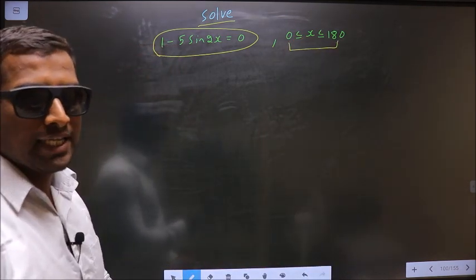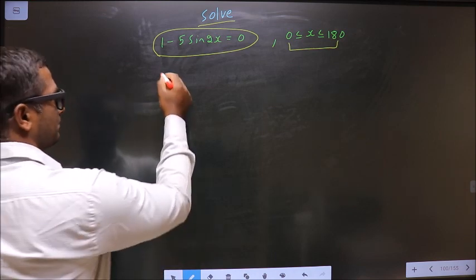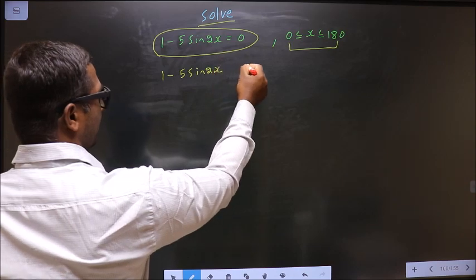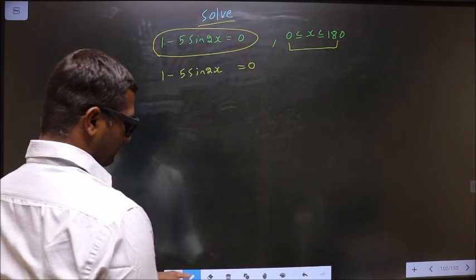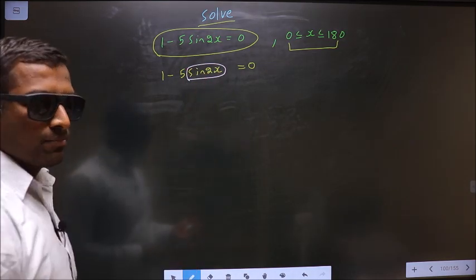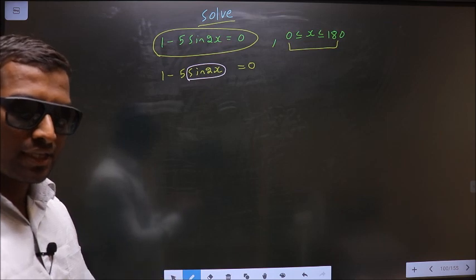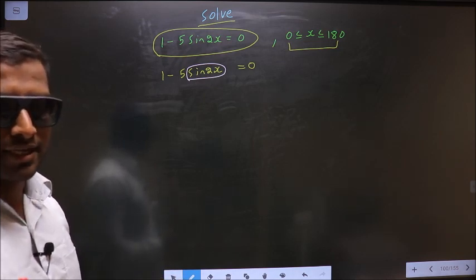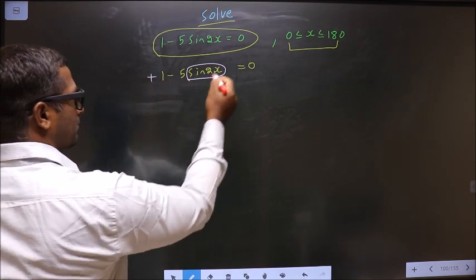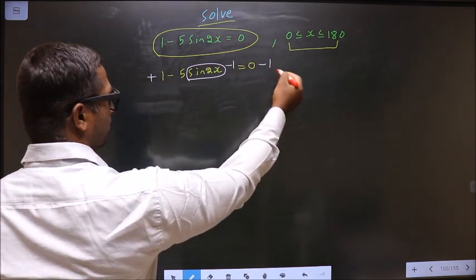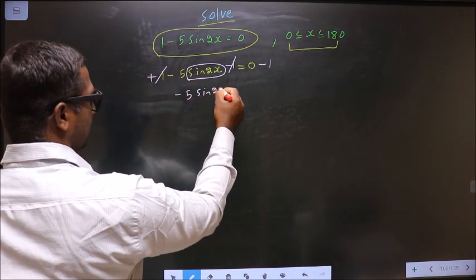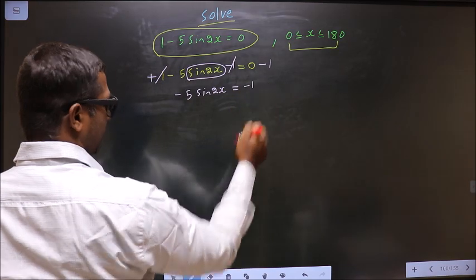First, the given equation is 1 minus 5 sin 2x equal to 0. Here you have sin 2x, so now you make sin 2x the subject. For that, remove all the connections connected to sin 2x. First, to remove plus 1, you subtract 1 on both sides. So we get minus 5 sin 2x equal to minus 1.